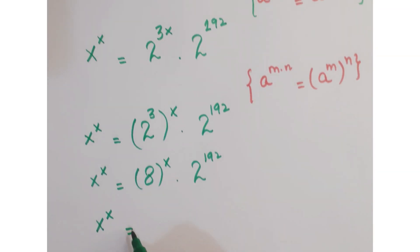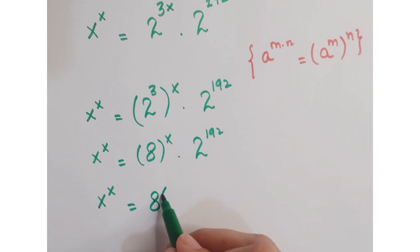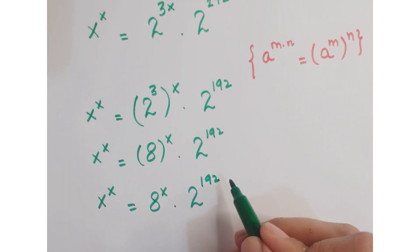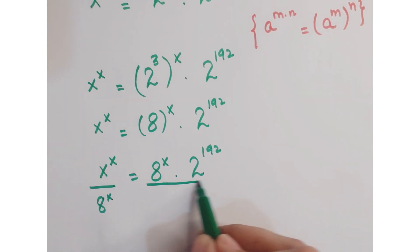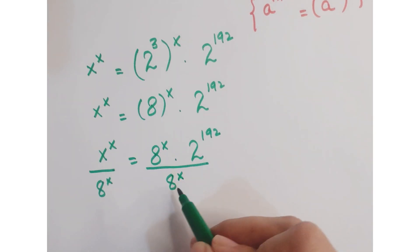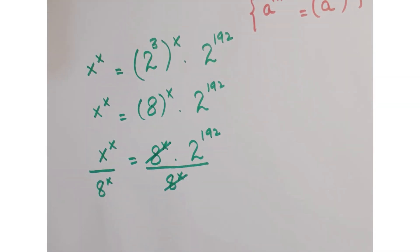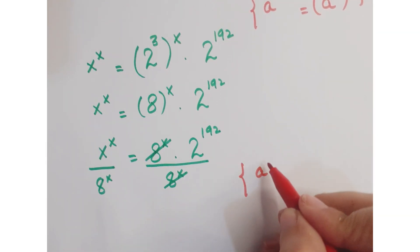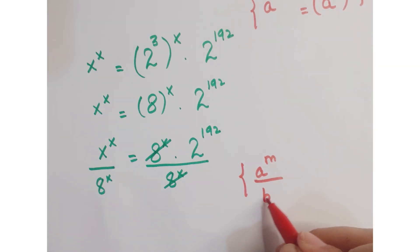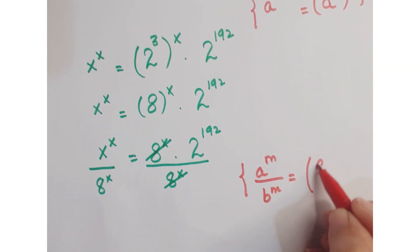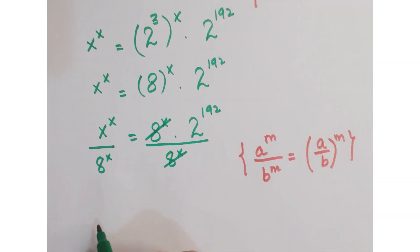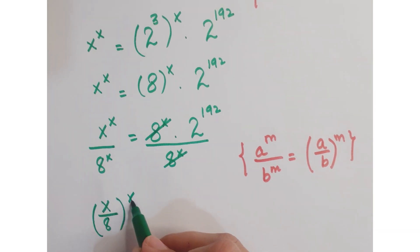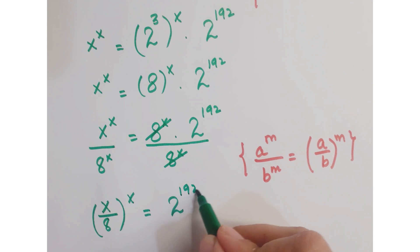Further, we can write it as x to the power x is equal to 8 to the power x into 2 to the power 192. Now, divide by 8 to the power x on both sides. This term and this term get cancelled, and you know that a to the power m upon b to the power m can be written as a upon b whole to the power m. So you can write this as x upon 8 whole to the power x is equal to 2 to the power 192.